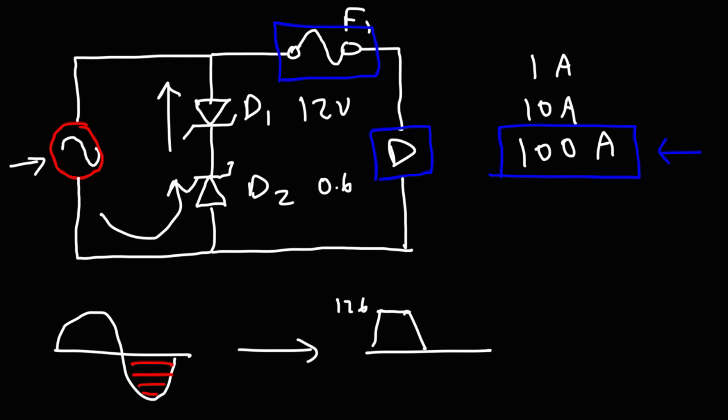So that's how you can create a high voltage surge protection circuit. The fuse protects the device from large amounts of current. The Zener diodes protect the device from high voltages.